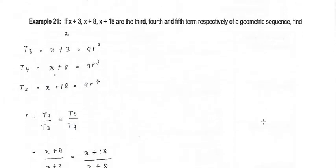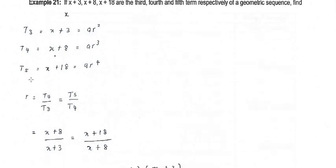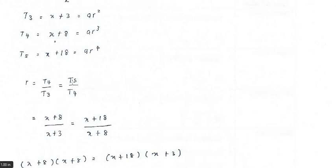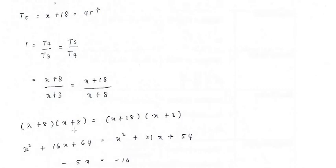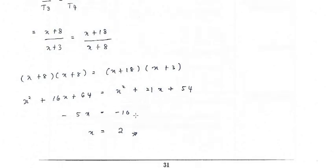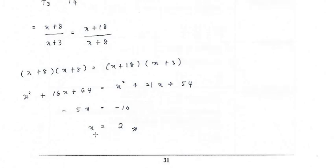Example 21: if X plus 3, X plus 8, and X plus 18 are the third, fourth, and fifth terms respectively of a geometric sequence, find X. Since a geometric sequence has a common ratio, T4 over T3 must equal T5 over T4. Substituting: (X plus 8) over (X plus 3) equals (X plus 18) over (X plus 8). Cross-multiplying and expanding, then simplifying, we get X equals 2.